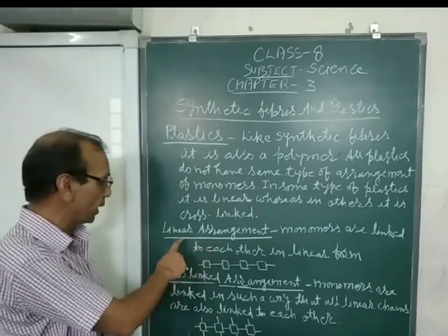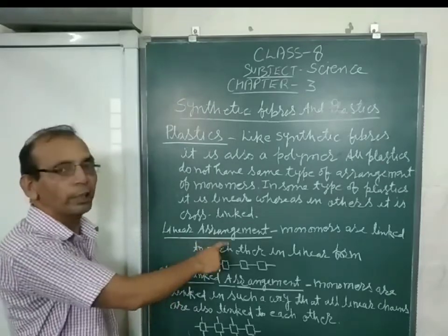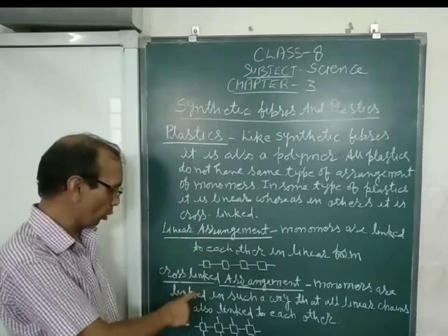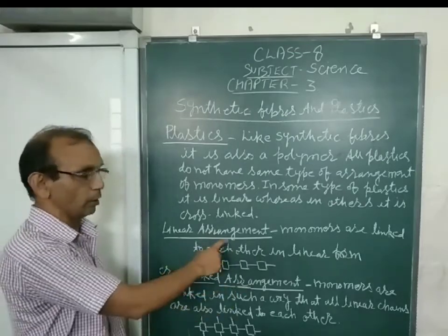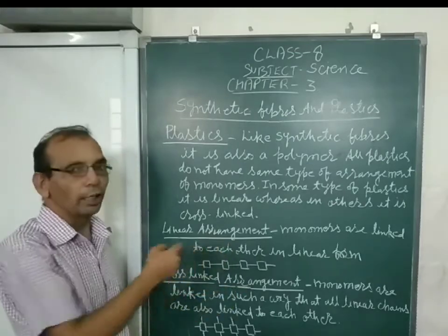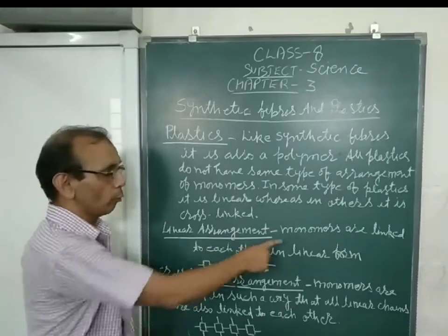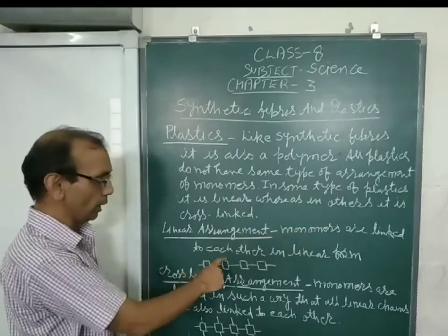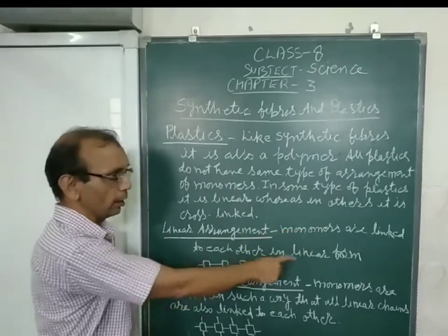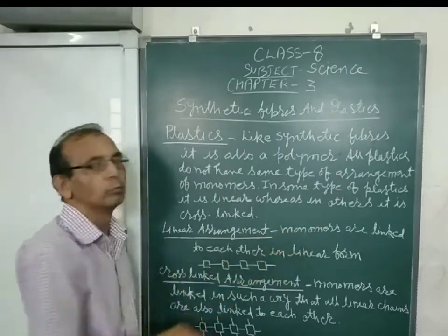So, what is linear alignment and cross-linked alignment? Linear alignment means monomers are linked to each other in a linear form.